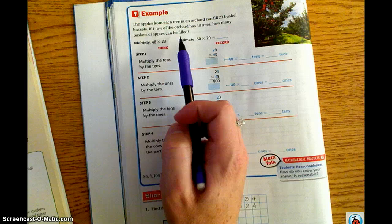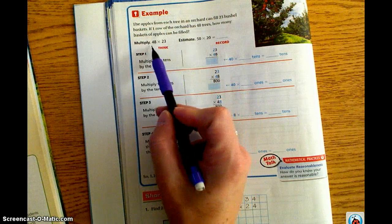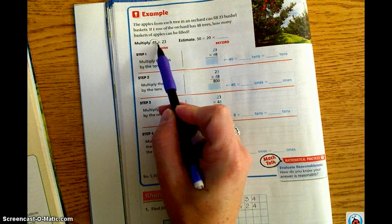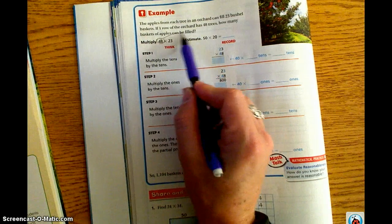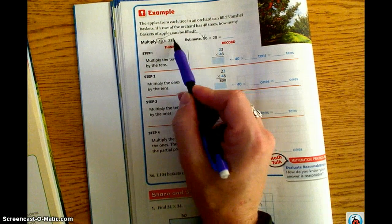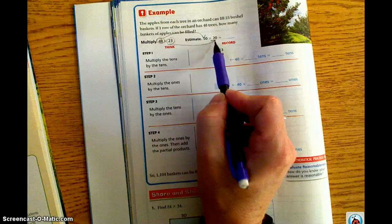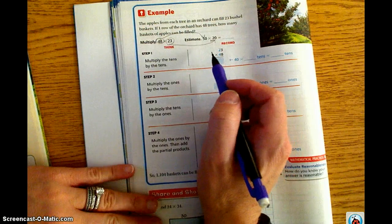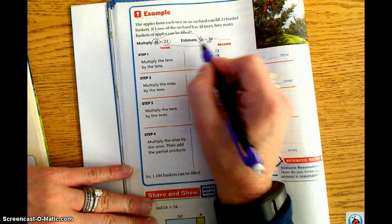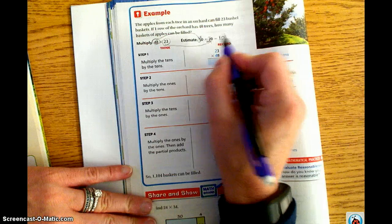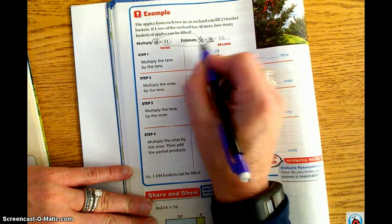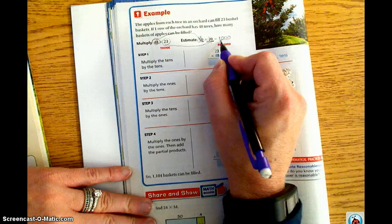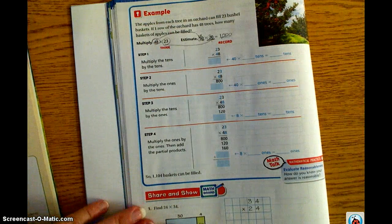Just like we did on the previous problem, we first want to estimate. We know that we're going to take 48, and it's going to become 50. And we're going to take 23, and it's going to become 20. Using mental math, we know that 5 times 2 is 10. And then we have two zeros represented in the original problem. So our estimate is going to be 1,000.